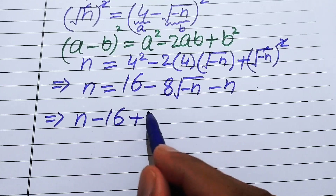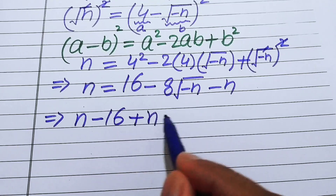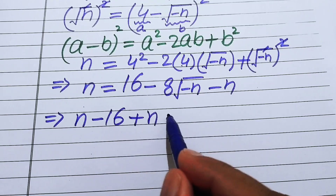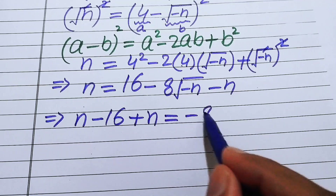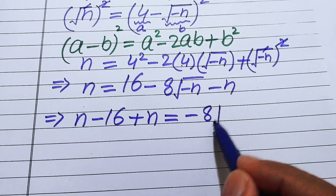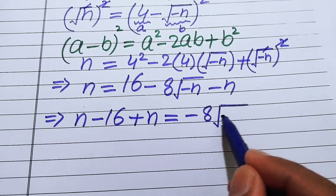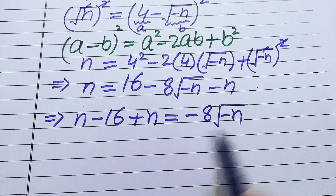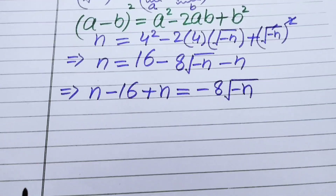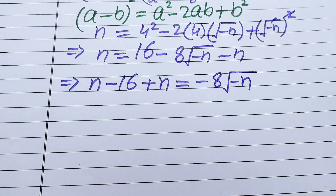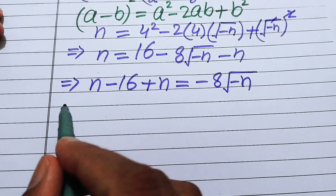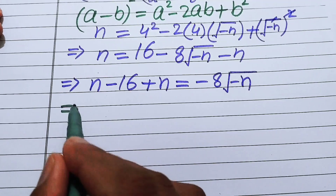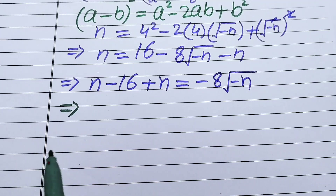Moving those terms to the left hand side gives us: n plus n minus 16 equals minus 8 times √(−n). In the next step we add the like terms to simplify further.